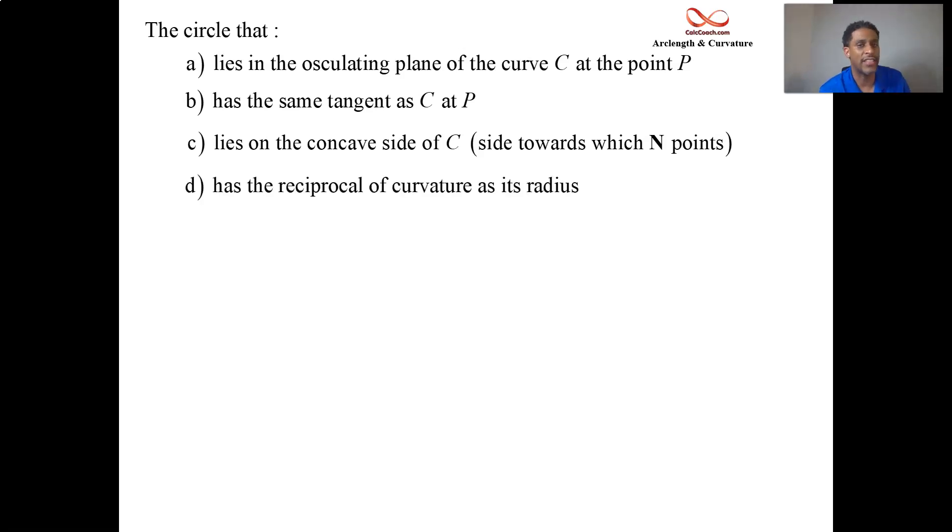But its radius is related to curvature in the following way. It's very strange. The radius of the oscillating circle is the reciprocal of curvature. Yeah, but the radius is one over kappa. And it's called the oscillating circle.